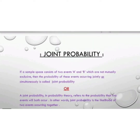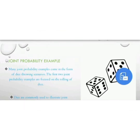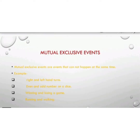If a sample space consists of two events A and B which are not mutually exclusive, then the probability of these events occurring jointly or simultaneously is called joint probability. Joint probability refers to the probability that two events will both occur — in other words, it is the likelihood of two events occurring together. An example of joint probability is the rolling of dice.